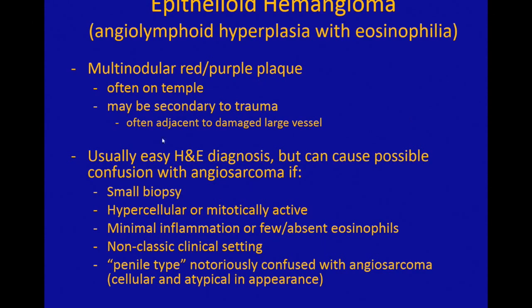One thing to point out: the penile type of epithelioid hemangioma can look very cellular and atypical and can easily get confused with angiosarcoma. For obvious reasons, it's really important not to misdiagnose angiosarcoma on the penis because it can result in irreversible, terrible surgical complications. So it's very important to know that if you see a weird vascular lesion on the penis, always consider the possibility of an epithelioid hemangioma that's looking atypical because of its unique subtype. That's an important lesion to be aware of.